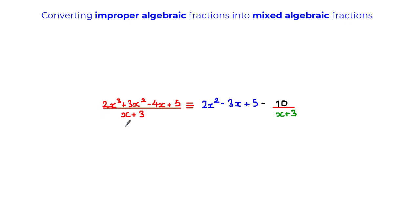Here is an example of an improper algebraic fraction. It's improper because the degree of the numerator is greater than the degree of the denominator — here the degree is 3 and here the degree is 1. Please note that you can also get improper algebraic fractions when the degree of the numerator is equal to the degree of the denominator.